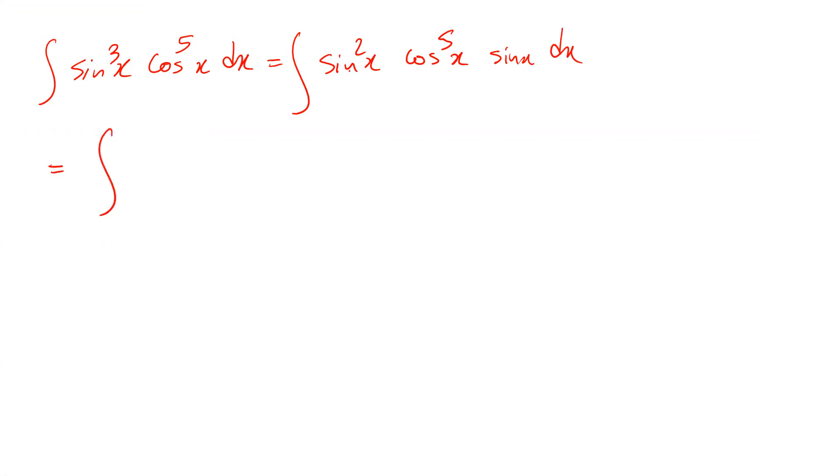And you can rewrite this one as, instead of sine 2x, I write 1 minus cosine 2x times cosine 5x times sine x dx.